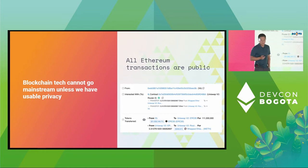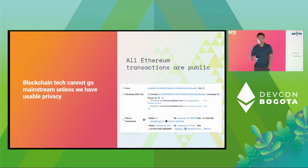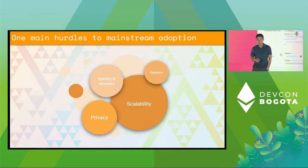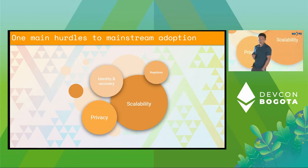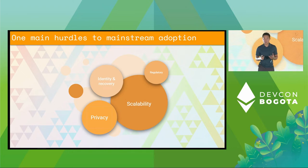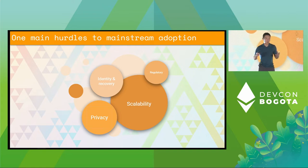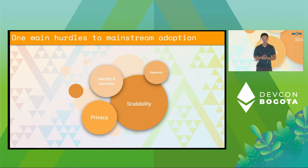Obviously, the reason why we need privacy is because we don't have it right now. If you go to Etherscan, every single transaction is public — you're able to see the entire history of all the wallets. The second reason why we need privacy is that if we want mainstream adoption of our blockchain technologies, we really need privacy. It's one of the main hurdles alongside scalability, identity, and other issues.